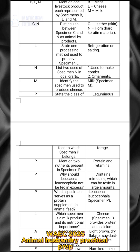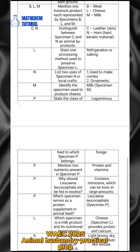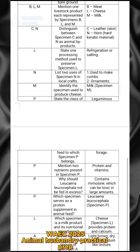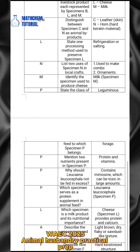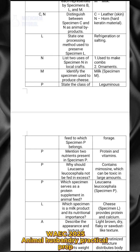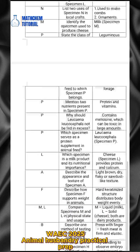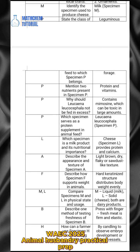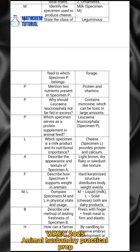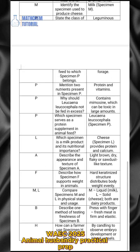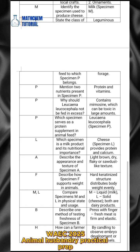For specimen P, state the class of feed to which it belongs. The answer is leguminous forage. Also for specimen P, mention two nutrients present. The answer is protein and vitamin.